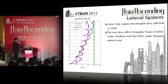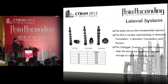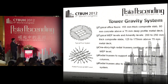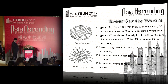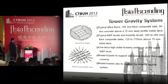Under wind conditions, the China code requires a stringent story drift limit of 1/500. The maximum story drift of Shanghai Tower is 1/505 under resultant wind and 1/623 under frequent seismic load. The fundamental period is 9.6 seconds, meeting China code requirements. For MEP levels, 200 to 250 mm thick composite slabs are used, along with one-story-high radial trusses cantilevering at the upper MEP level to support slab areas beyond the supercolumns.